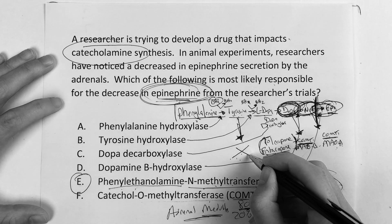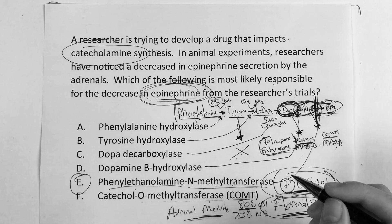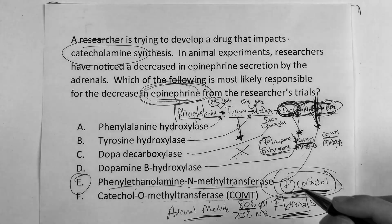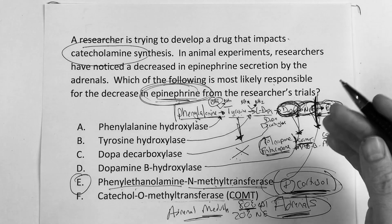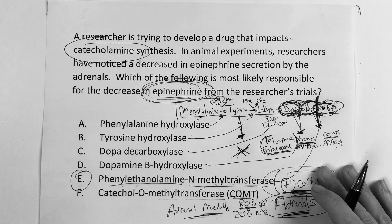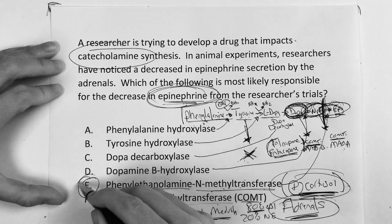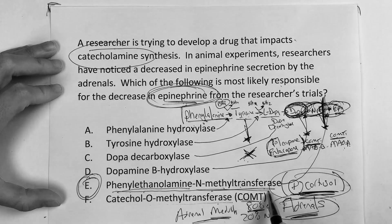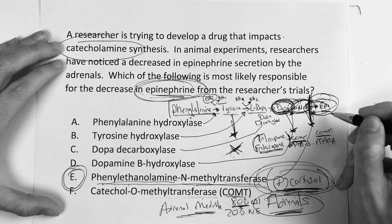But if you knock out homogentisate dioxygenase, that's going to give you alkaptonuria. So again, it's all about telling the story. And the answer for this question is going to be phenylethanolamine N-methyltransferase — it can be upregulated by cortisol, but it's the enzyme whose inhibition would decrease epinephrine.